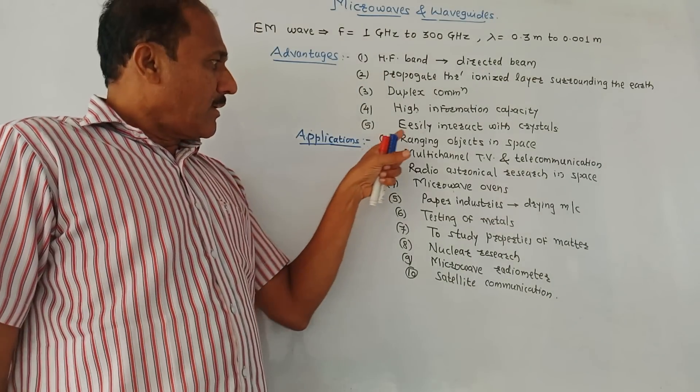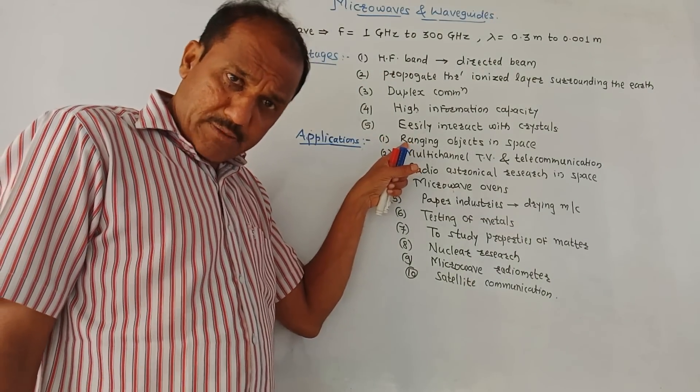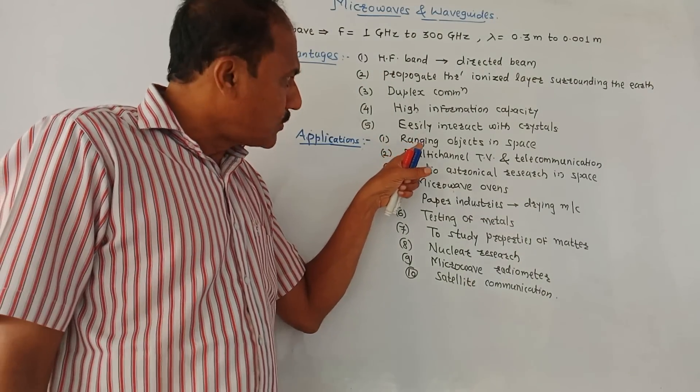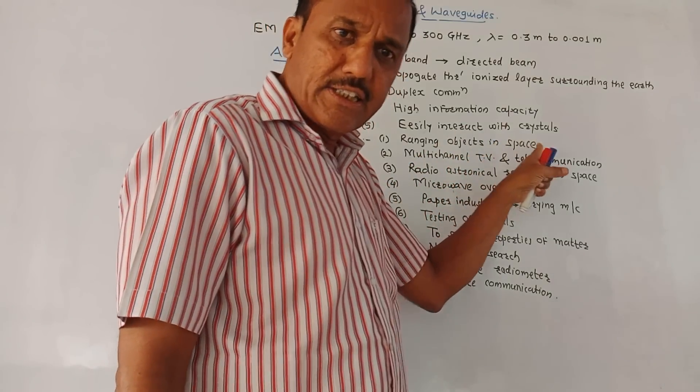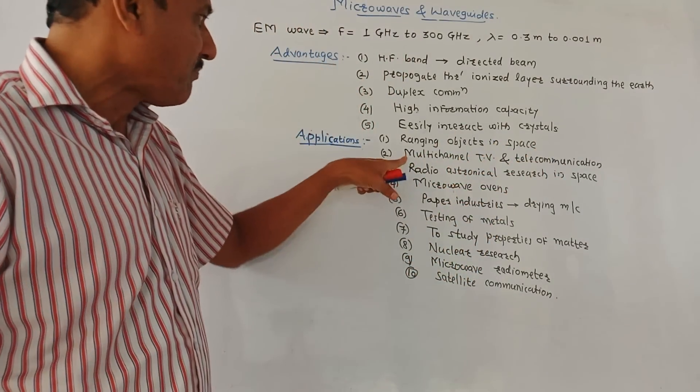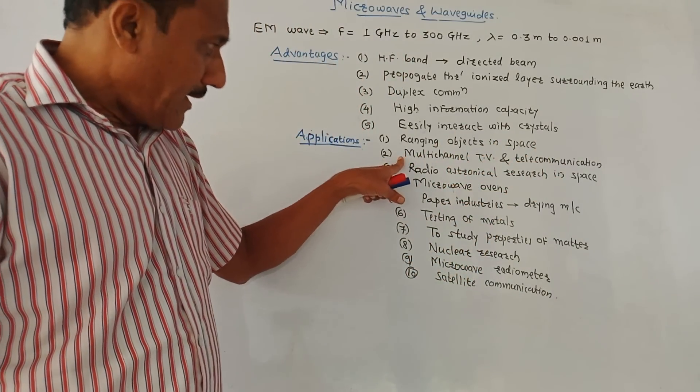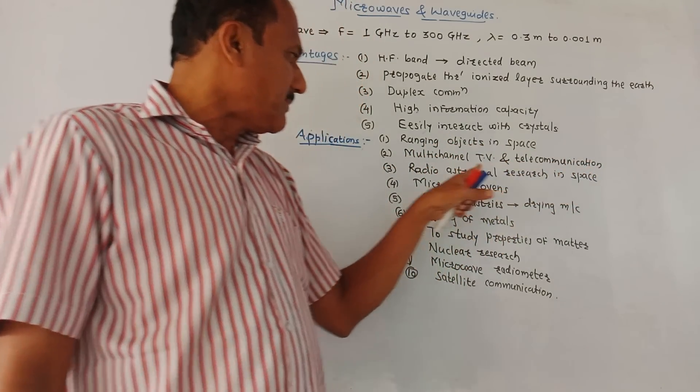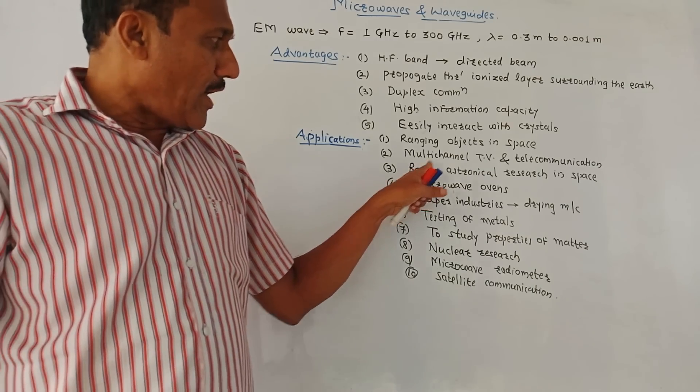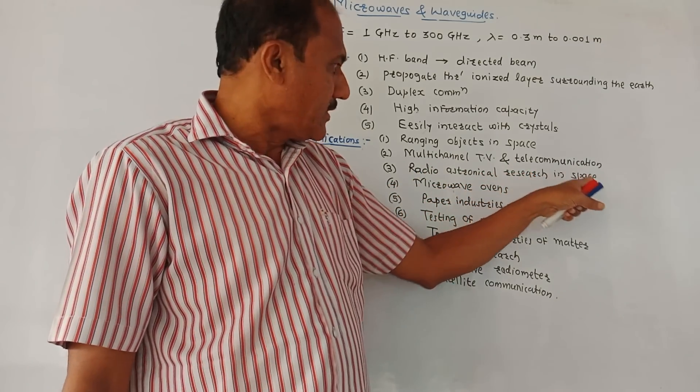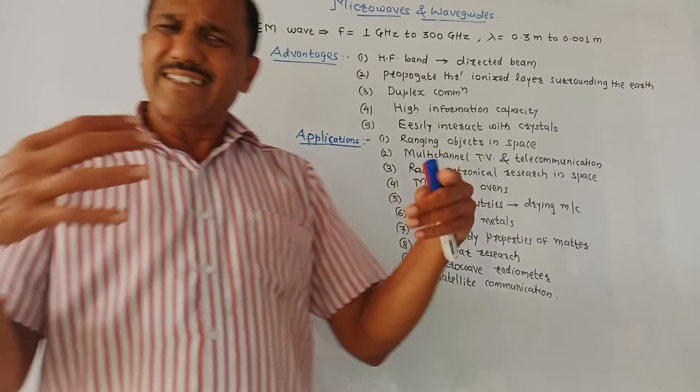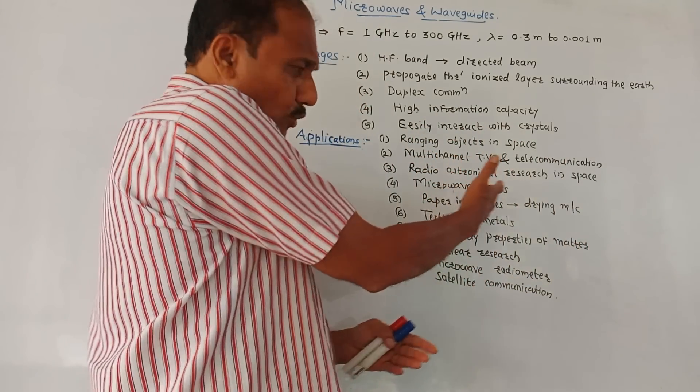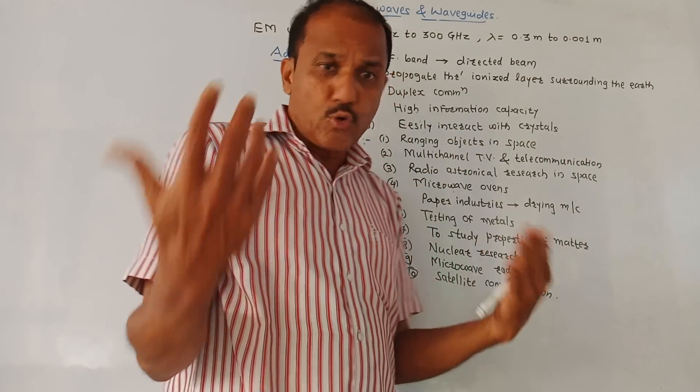Now applications. First, an important application is microwaves are used for ranging objects in the space, in the space space. Second, they are used in multi-channel television and telecommunication systems. Third, radio astronomical research in the space. Fourth, we know that this is very common example. Microwave ovens, they are used for cooking purposes.